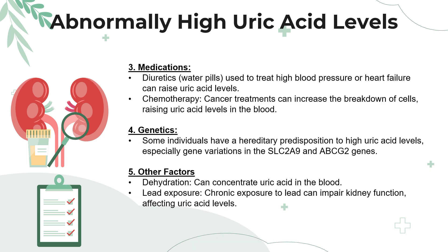At number three, we have the use of certain medications. Diuretics, known as water pills, used to treat high blood pressure or heart failure, can raise blood uric acid levels. Chemotherapy can also cause high uric acid levels, as cancer treatments increase the breakdown of cells. At number four, we have genetic causes — some individuals have a hereditary predisposition to high uric acid levels, especially with gene variations in the SLC2A9 and ABCG2 genes. At number five, other factors include dehydration, which can concentrate the blood leading to higher uric acid levels, and chronic lead exposure, which can impair kidney function and affect uric acid levels.